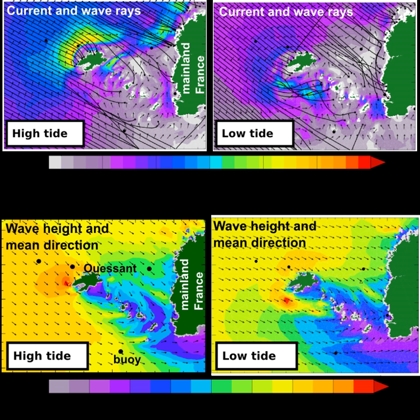The WAM model was the first so-called third-generation prognostic wave model where the two-dimensional wave spectrum was allowed to evolve freely with no constraints on the spectral shape. The model underwent a series of software updates from its inception in the late 1980s. The last official release is Cycle 4.5, maintained by the German Helmholtz Zentrum Geesthacht. ECMWF has incorporated WAM into its deterministic and ensemble forecasting system, known as the Integrated Forecast System. The model currently comprises 36 frequency bins and 36 propagation directions at an average spatial resolution of 25 km, and has been coupled to the atmospheric component of IFS since 1998.